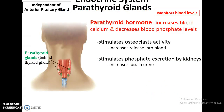The parathyroid glands are found on the posterior side of the thyroid gland, also independent of the anterior pituitary gland. They monitor blood levels, and when calcium levels get too low in the bloodstream, parathyroid hormone is released to increase blood calcium levels. It stimulates osteoclast activity to break down bone tissue and release calcium, and stimulates phosphate excretion by the kidneys so excess phosphate is released in the urine.